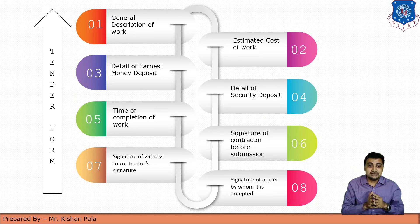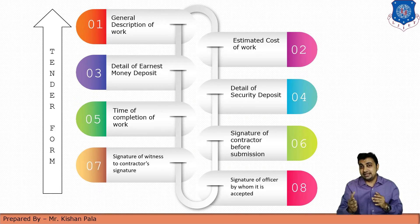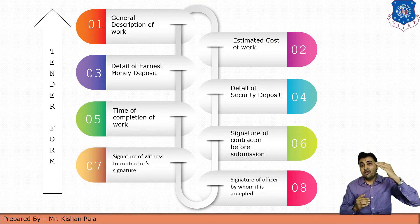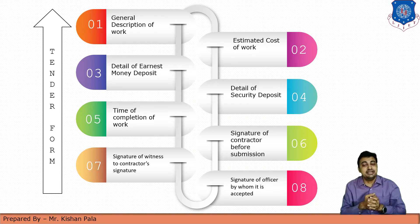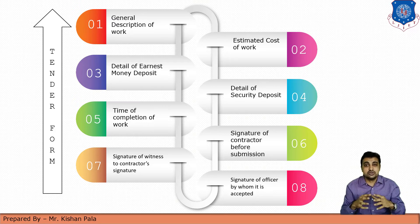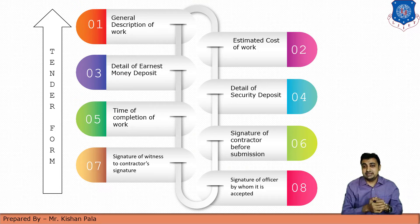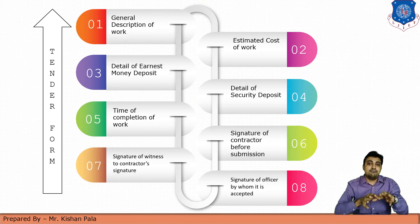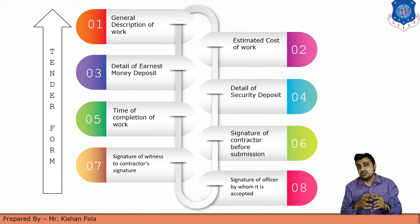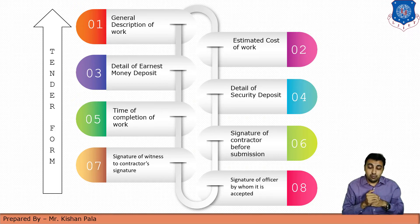Next is the detail of earnest money deposit, EMD. While filing the tender from the contractor's side, he has to pay the EMD, which is generally one to two percent of the total cost of the project. There should also be mentioned the details of security deposit, which is generally around 10 percent of the total cost of the project.